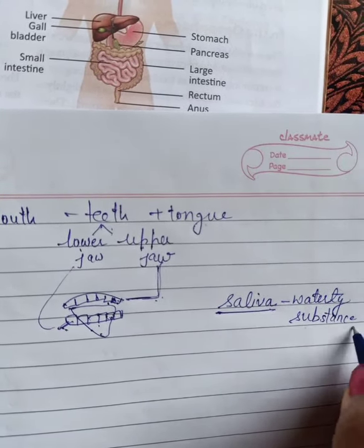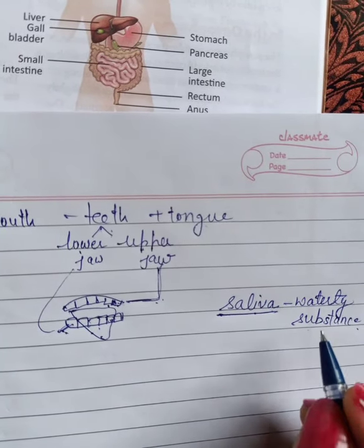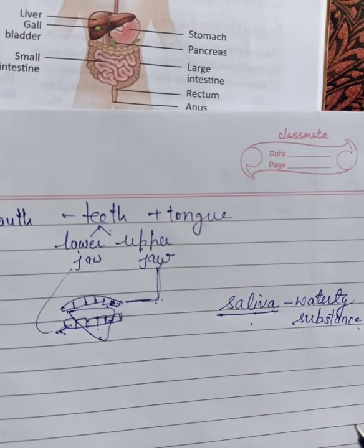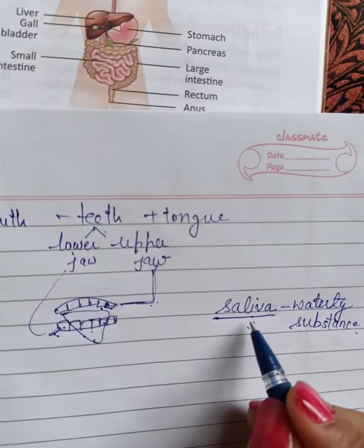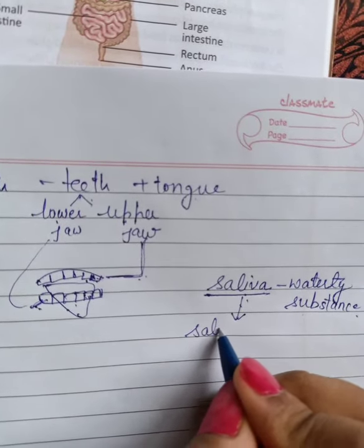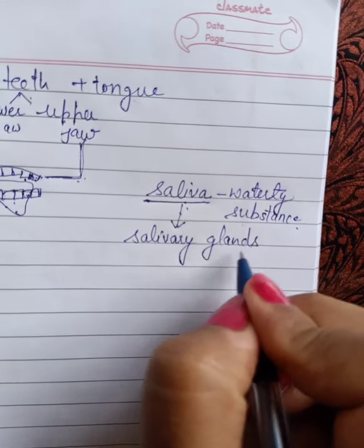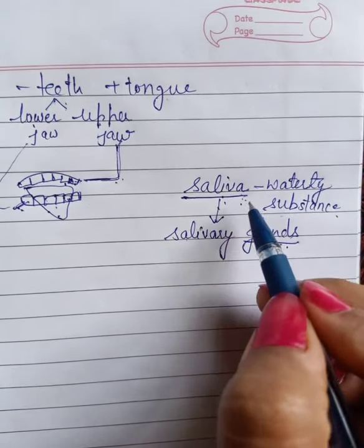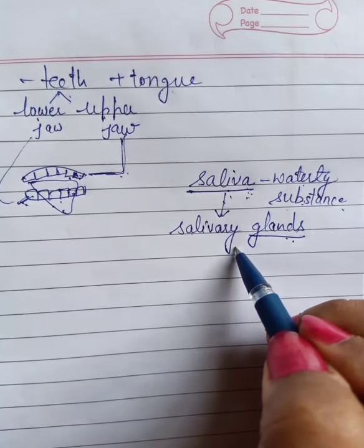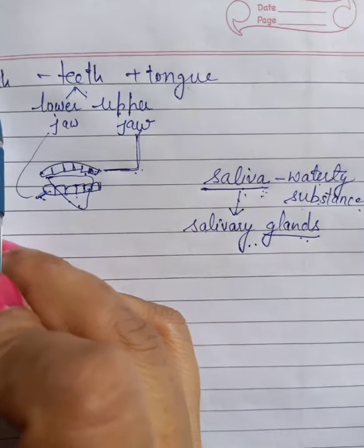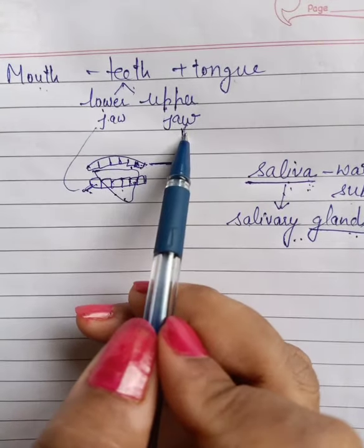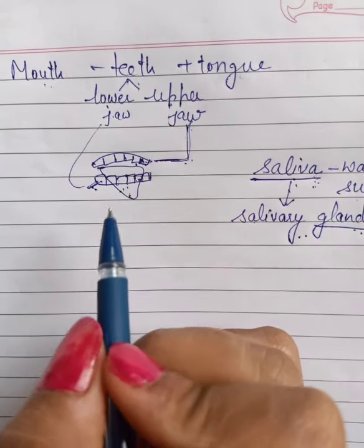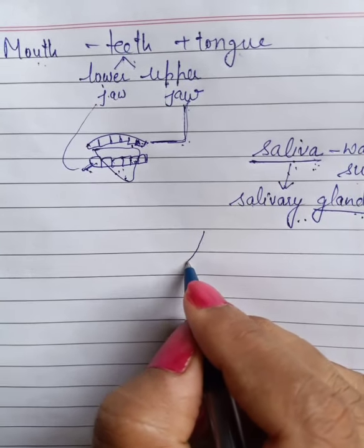What is saliva? Saliva is a watery substance. The water that comes in our mouth when we think about something we want to eat, or when we are eating something - that is saliva. Saliva is produced because inside our mouth we have salivary glands. Salivary glands are responsible for the production of saliva. What is the function of the mouth? The mouth has teeth - lower jaw and upper jaw - and the teeth help in breaking the food into smaller pieces.